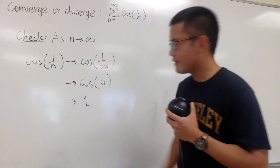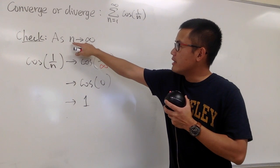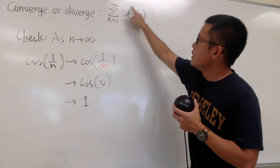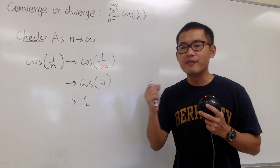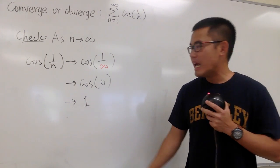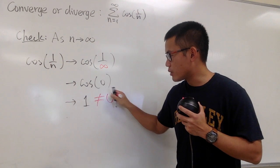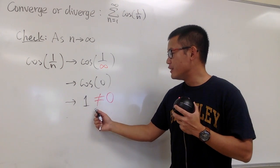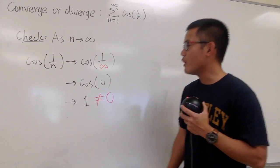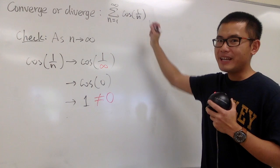In this case, we have 1. Well, what are we doing? When we take the limit as n goes to infinity of this expression only, we are trying to do the test for divergence. As long as this limit is not 0, we can draw a conclusion. 1 is certainly not 0. Therefore, we can draw a conclusion that this right here diverges.